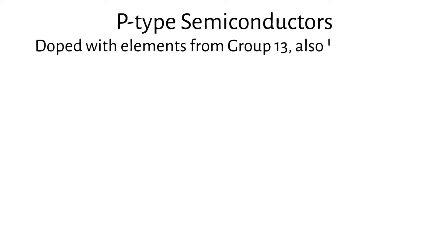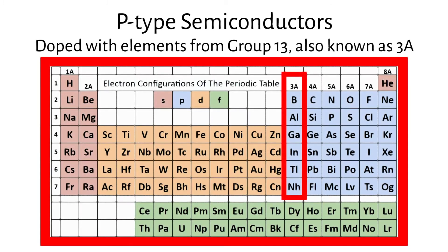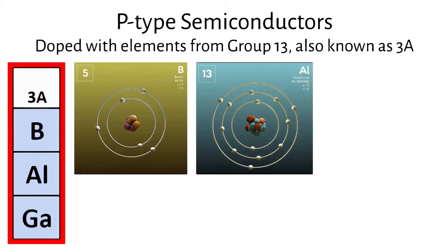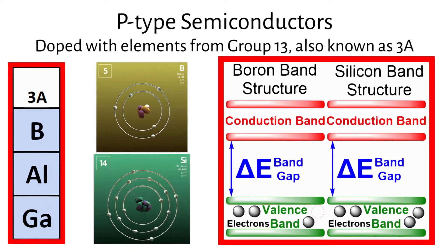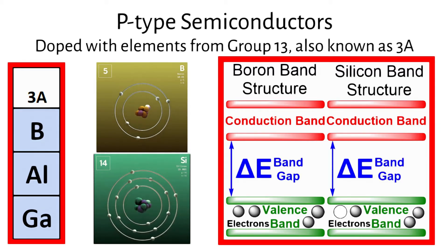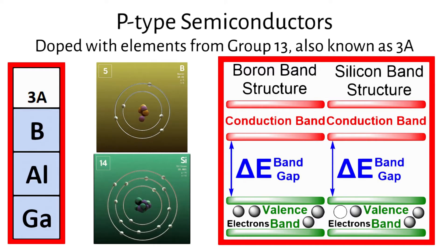P-type semiconductors are doped with elements from group 13 (also known as 3A) of the periodic table, such as boron, aluminum, or gallium. These elements have three valence electrons, one less than silicon which has four. This creates a hole or absence of an electron in the valence band, which acts as a positive charge carrier. Electrons from neighboring silicon atoms can move to fill this hole, effectively allowing the hole to move through the material and contribute to electrical conductivity. In p-type semiconductors, holes are the majority carriers.